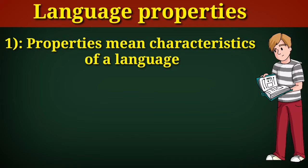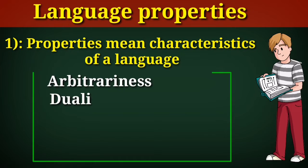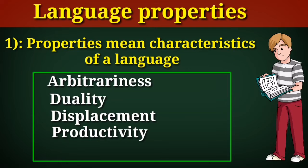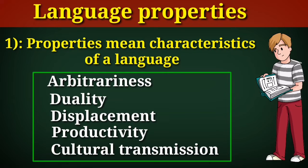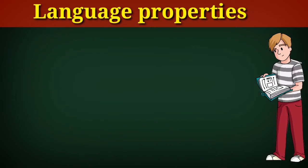The properties of a language are arbitrariness, duality, displacement, productivity, and cultural transmission. Let's move and explain them one by one.